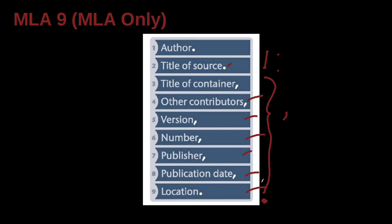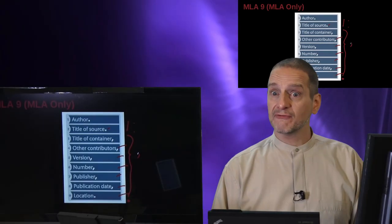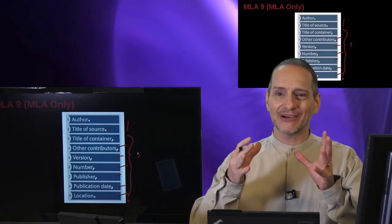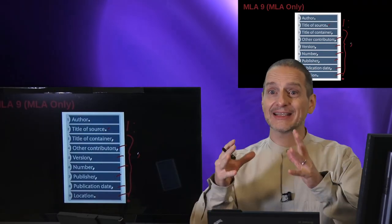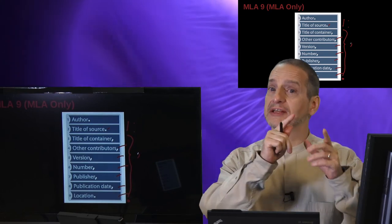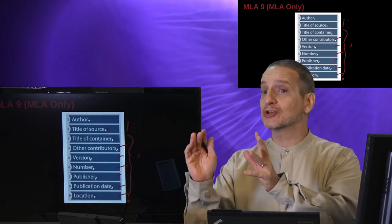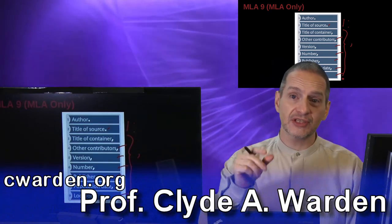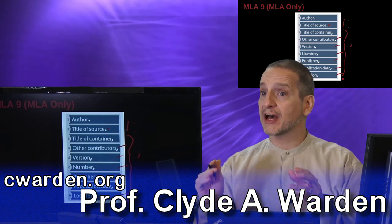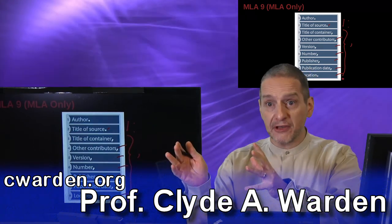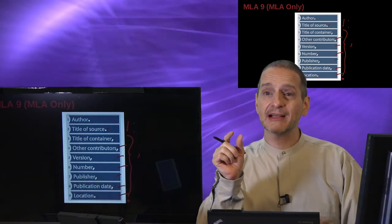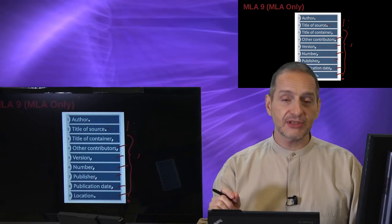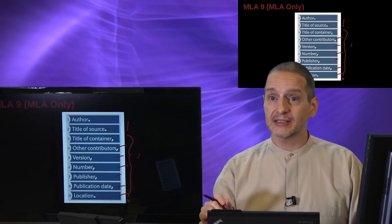You have a chunk of information, then a description of the whole container. That is what MLA is always emphasizing — what is the container, and how can I find it? How can I find the book that has the chapter you're citing? How can I find the journal that has the article, or the video or film that has the piece of dialogue you're citing? This is the MLA's emphasis.